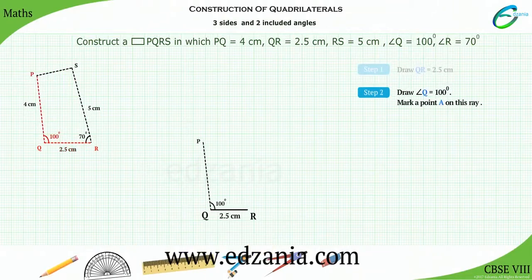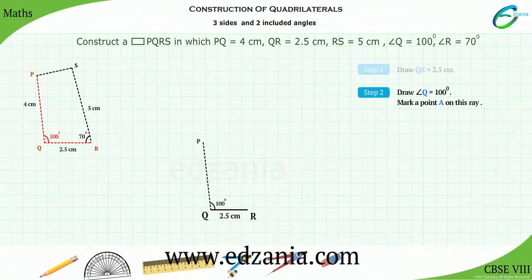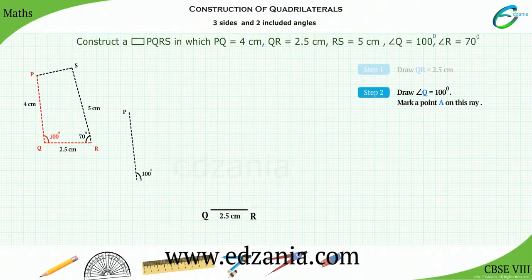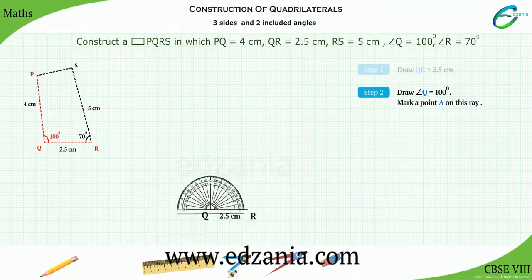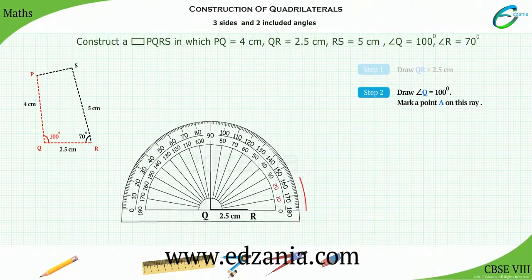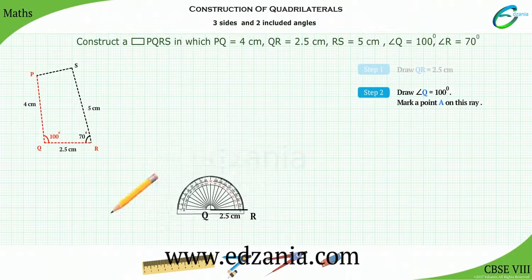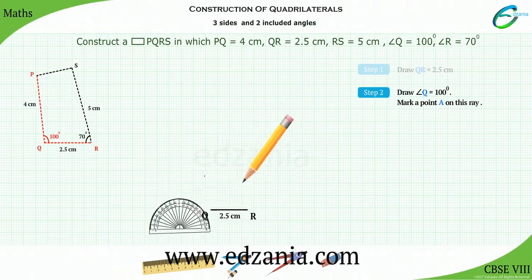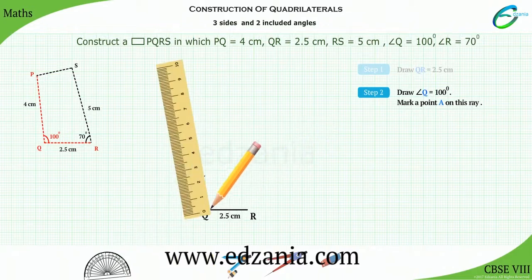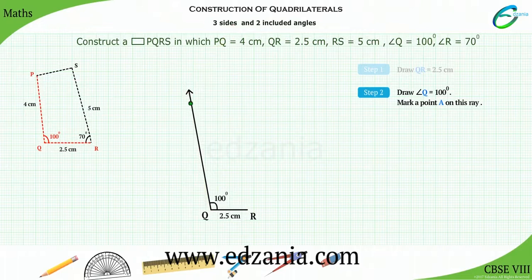Step 2. As angle Q is equal to 100 degrees, place the protractor on point Q and draw an angle of 100 degrees. Mark any point on this ray, say point A.